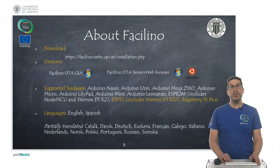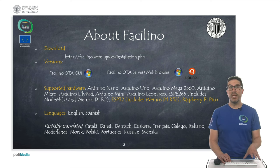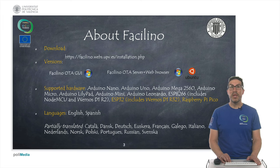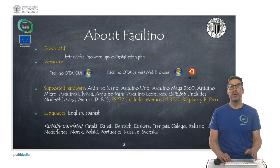First, you need to know that Facilino is a software that can be downloaded and here you have the URL in order to install the software. There are two versions of Facilino that you can use. One of them is Facilino OTA guide, which is an installable software you can install on Windows, and the other alternative is Facilino OTA server, which is a binary — a server that allows a web browser to program the electronics using Facilino.